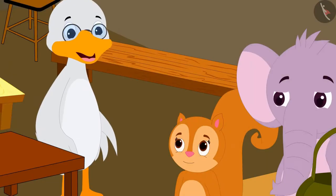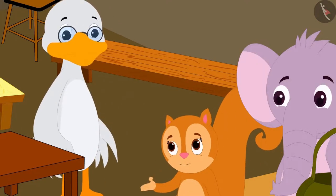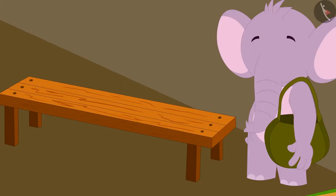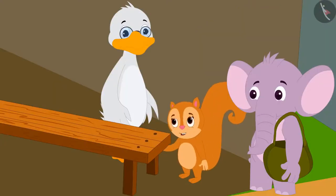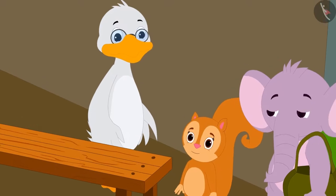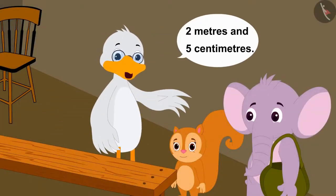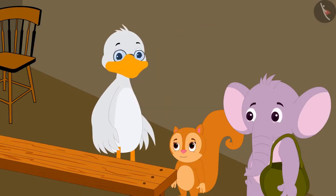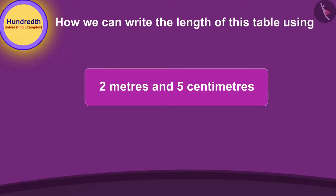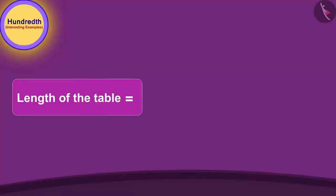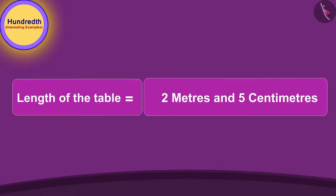Well done Chanda, you learned very quickly! Uncle said. Appu liked another table. Uncle, uncle, what is the length of this table? Chanda asked uncle. Two meters and five centimeters, uncle replied. Children, can you tell how we can write the length of this table using a decimal point? You can stop the video and find the answer. The length of the table is two meters and five centimeters.